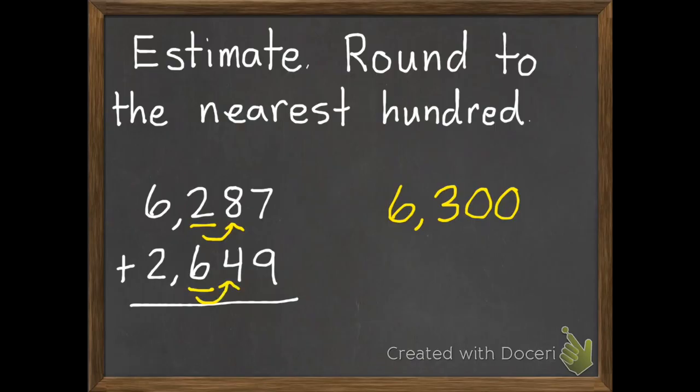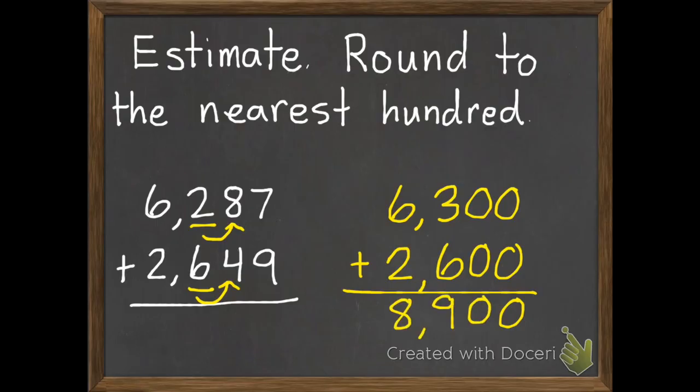Our second number, the hundred is a 6. The number after it is a 4 or less, so the 6 will stay the same. So I will have 2,600. Now we can just use mental math like we did earlier and I can add these and get 8,900.